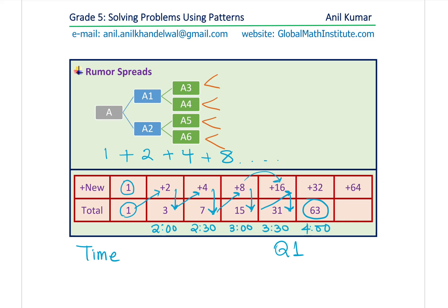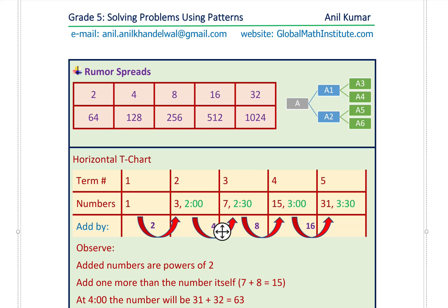Let us see another way of displaying the same information. Every time, times-two people come to know about it. First, Anil informs two; those two inform two more, so four get added, then eight get added to the list, then 16, and so on — double the number of people come to know about the rumor. This information has been placed on a horizontal t-chart. Every position will be a term number: one, two, three, four, five and so on, and these are the number of people who know about the rumor.